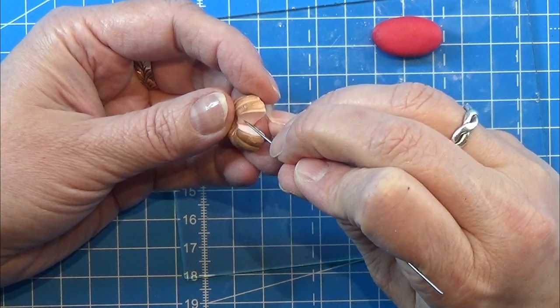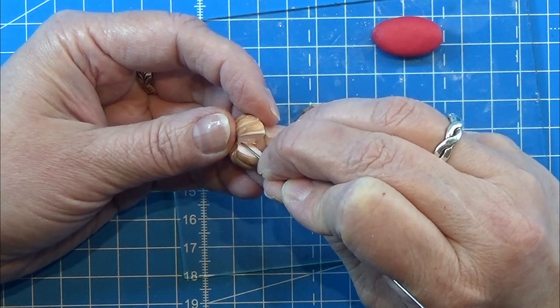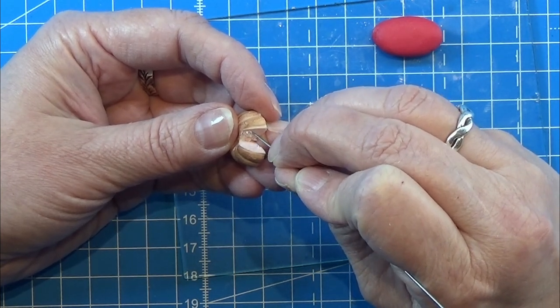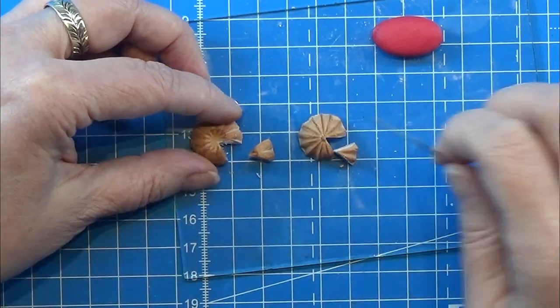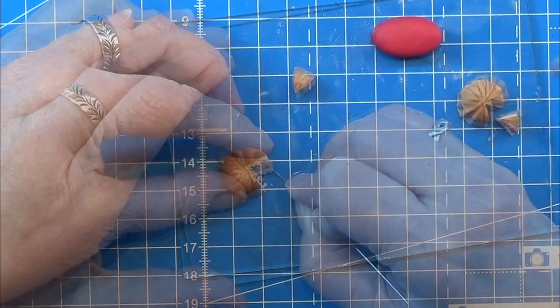And then I am using a needle tool and I am just going to scratch the inside of the cake and the two cake pieces. I am taking my time with this but I will skip this so you don't have to look at it all the way through.